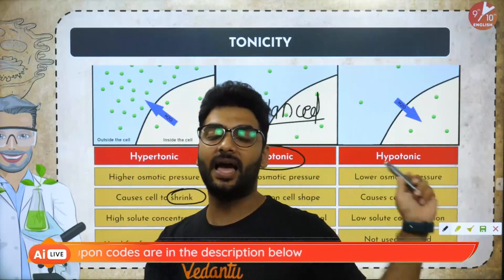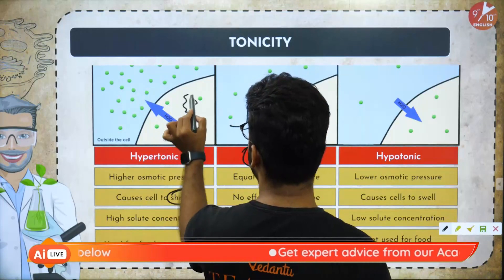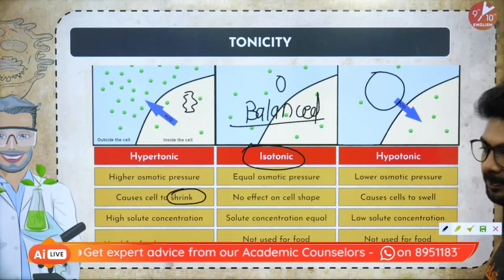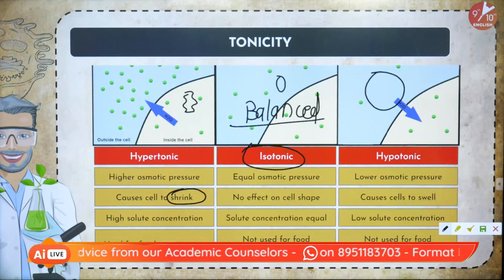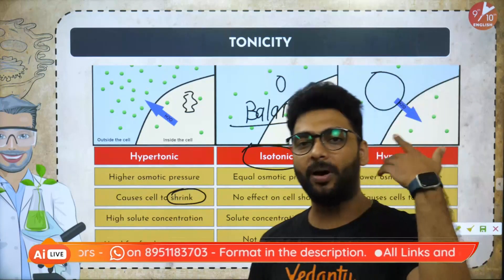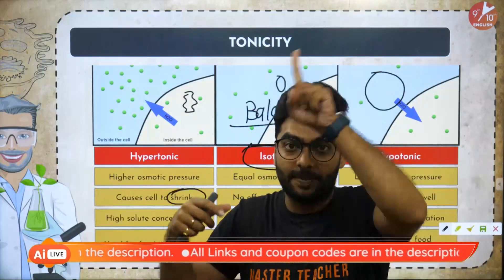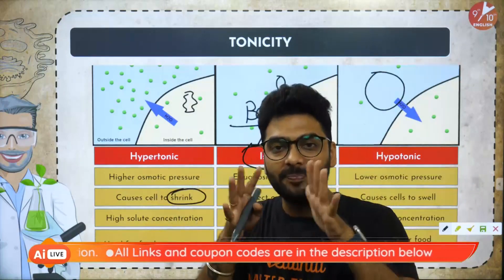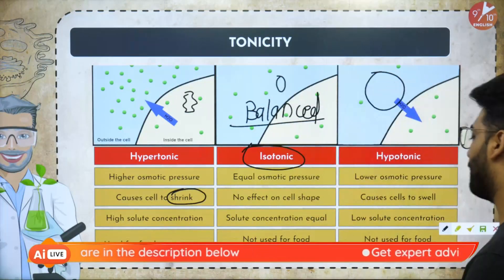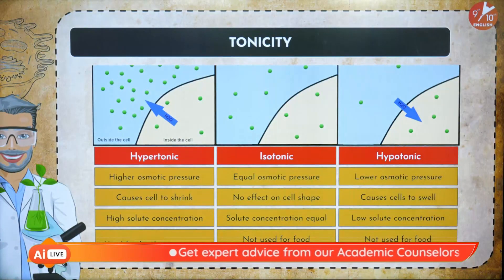To summarize: in hypertonic solution the cell shrinks, in isotonic it is normal and balanced, and in hypotonic the cell swells. A memory trick: 'Hyper' — going out, shrinking; 'Hypo' — big O, so swelling; 'Isotonic' — balanced. That covers hypertonic, isotonic, and hypotonic osmosis.